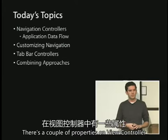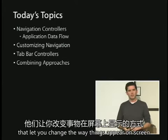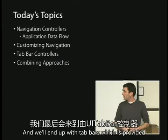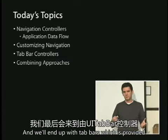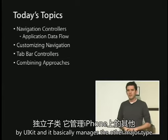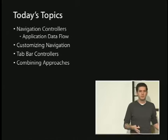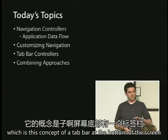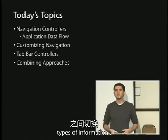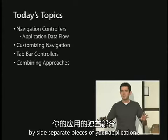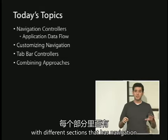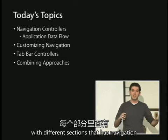We'll talk about customizing navigation — there are properties on view controller that let you change the way things appear on screen and how the navigation controller presents them. We'll end up with tab bars, provided by UITabBarController, a separate subclass of UIViewController provided by UIKit. It manages the other major type of application flow on the iPhone: a tab bar at the bottom of the screen that lets a user tap between multiple discrete types of information. We'll talk about how you combine those two things to have a tabbed application with navigation within each section.